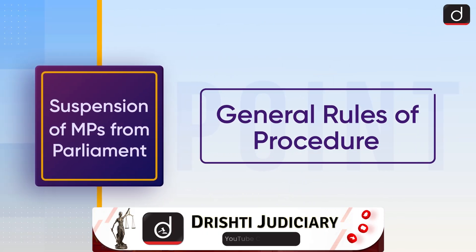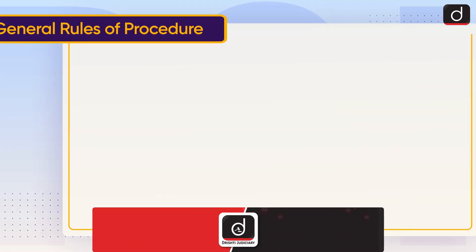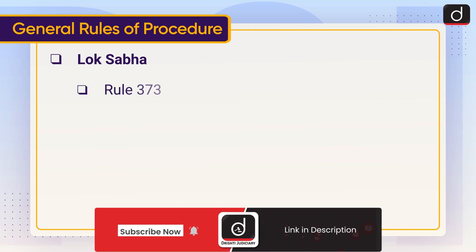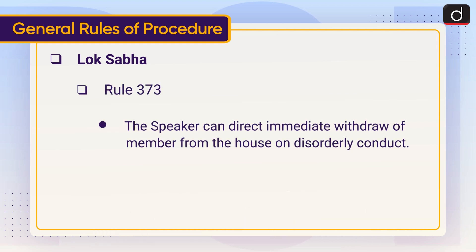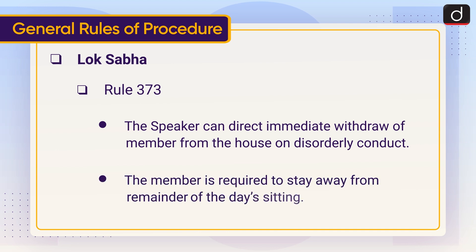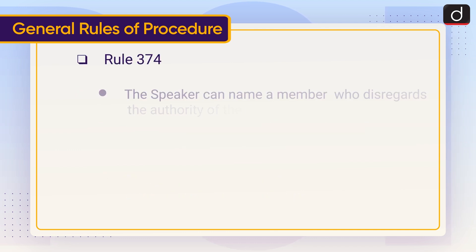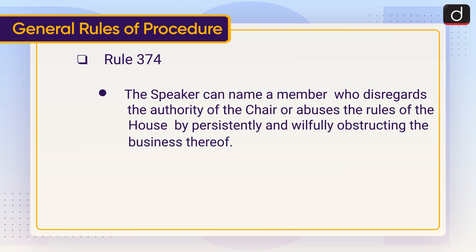Now let's look at the general rules of procedure. Lok Sabha Rule 373: the Speaker can direct immediate withdrawal of a member from the house on disorderly conduct; the member is required to stay away for the remainder of that day's sitting. Rule 374: the Speaker can name a member who disregards the authority of the chair or abuses the rules of the house by persistently and willfully obstructing the business thereof.